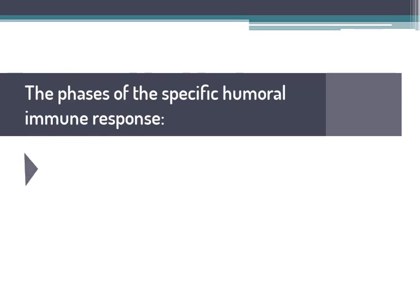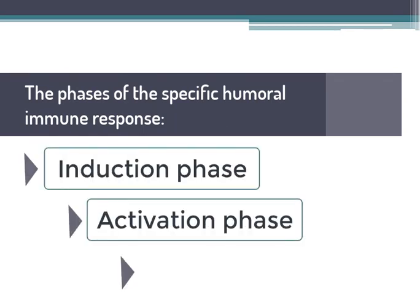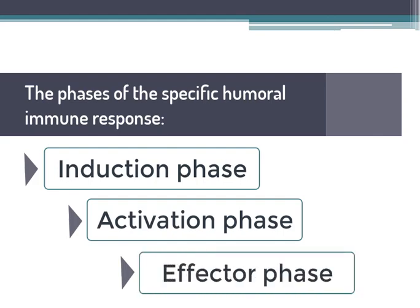Knowing that previous documents of this chapter have discussed the first two phases of the humoral immune response, induction and activation, this video is going to explain the last phase, which is the effector phase.